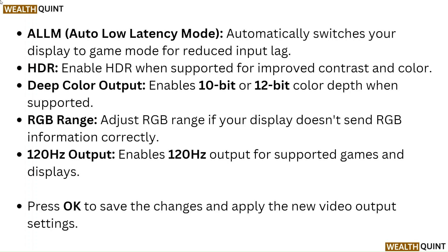HDR: enable HDR when supported for improved contrast and color. Deep Color Output: enables 10-bit or 12-bit color depth when supported. RGB Range: adjust if your display doesn't send RGB information correctly. 120Hz Output: enables 120Hz output for supported games and displays. Press OK to save the changes and apply the new video output settings.